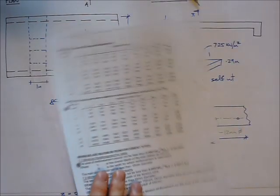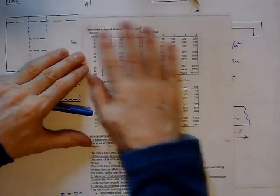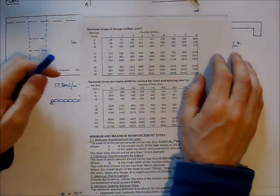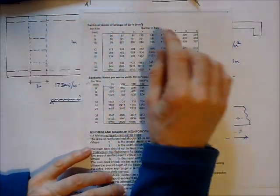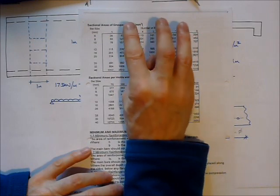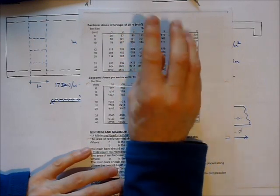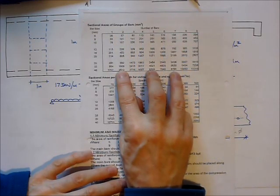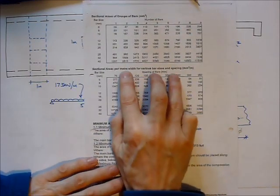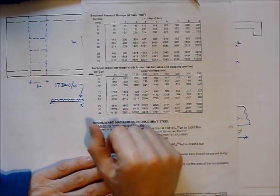I'm going to make use of some sectional area tables, which are pretty common. I'm sure that you can Google them and download some off the internet if you don't already have some. Usually these tables, two types of tables are used. One which relates to the number of bars which give a certain area of steel, and another which relates to the spacing of bars which give a particular area of steel. And we're going to use the spacing table.